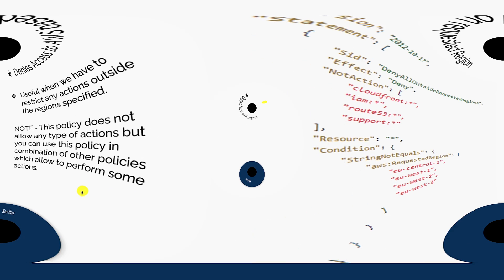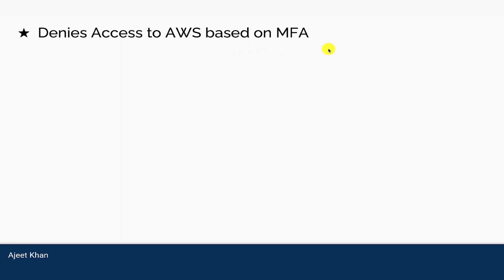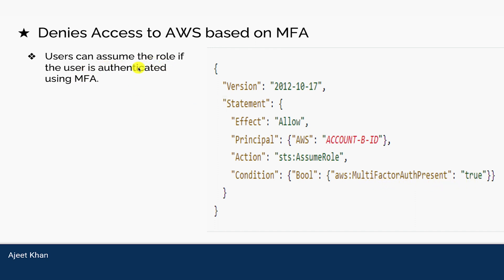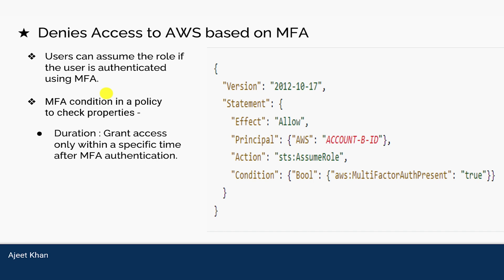Next is denying access to AWS based on MFA. If you want to enforce multi-factor authentication, you can use this kind of condition. In this policy the effect is allow, the principal is an AWS account, and the action is STS AssumeRole. We are allowing assume role based on the condition that MultiFactorAuthPresent is true. This essentially means assume role is allowed only when MFA is present or enabled. Users can assume the role only if they authenticated using MFA. You can also check the MFA duration or grant access only within a specific time after MFA authentication.